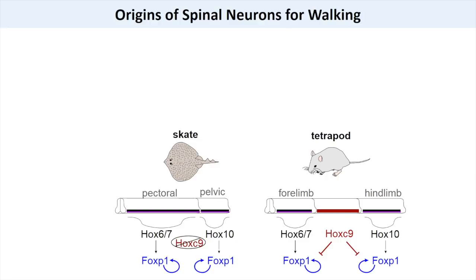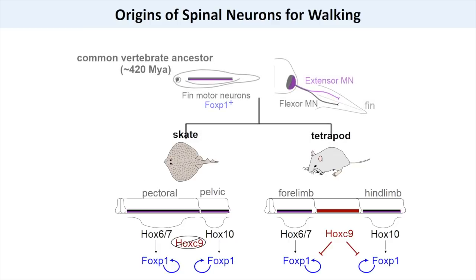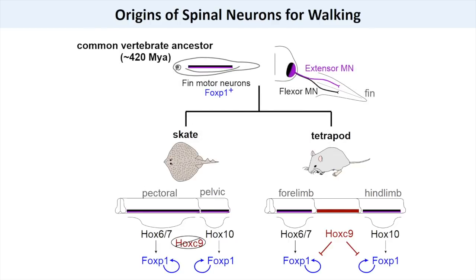These findings suggest that the common ancestor to skates and land vertebrates already had many of the developmental programs in place to generate a relatively complex type of motor behavior. While there is still much work to be done to determine whether the circuitry governing walking in skates is analogous to those of land vertebrates, the relative simplicity of skate fin musculature may provide a useful model system to decipher the basic wiring of circuits essential for limb control. This work could provide important information relevant to repairing spinal circuits damaged by disease or injury.